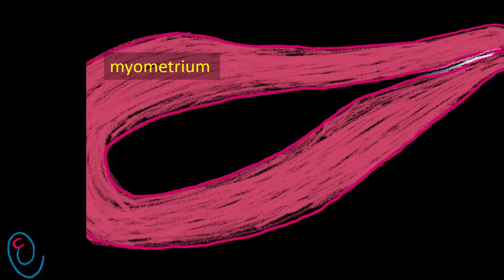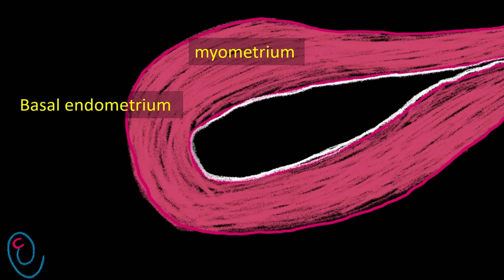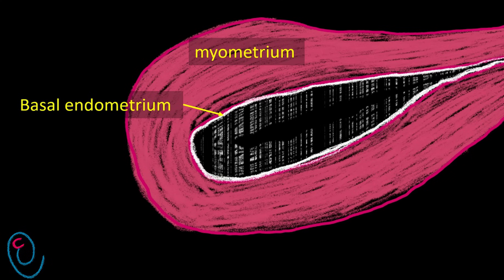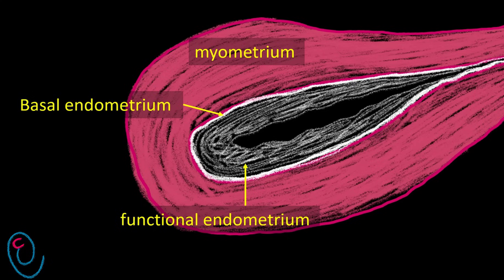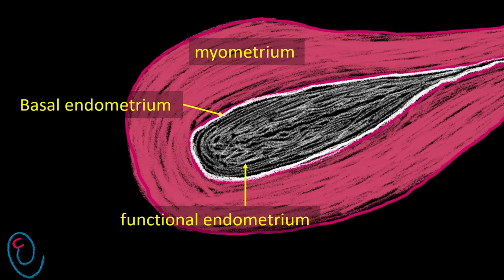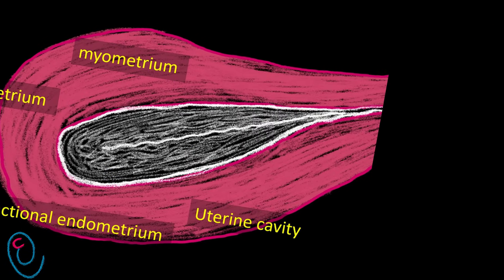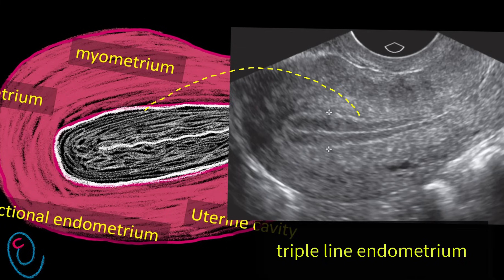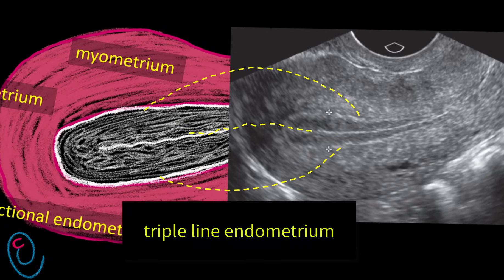Regarding the uterus, the inner surface of the myometrium is lined by a thin layer of endometrium known as the basal endometrium. This layer is permanent and does not shed during menstruation. When the endometrium grows, it forms another layer known as the functional endometrium. When the layers of functional endometrium meet in the midline, they form an echogenic line representing the uterine cavity — a picture known as the triple line endometrium, seen around the time of ovulation.